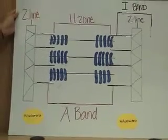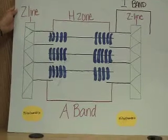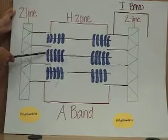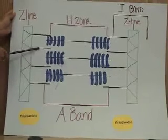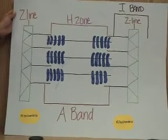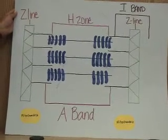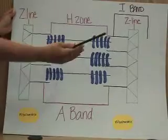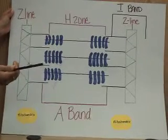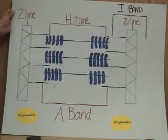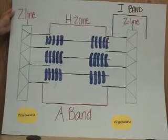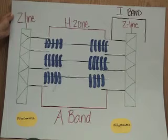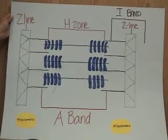Inside of the sarcomere, the thick filament grabs hold of the thin filament and pulls it, causing the Z-line and Z-line to come closer together, which is actually a single cell muscle contraction.